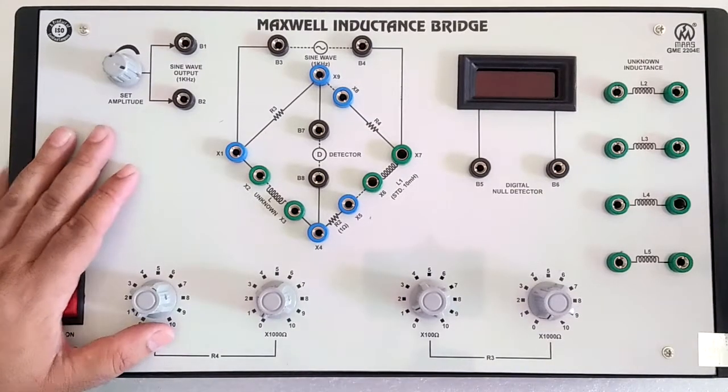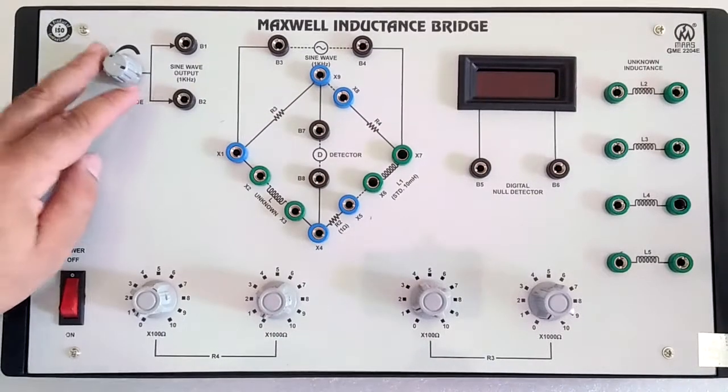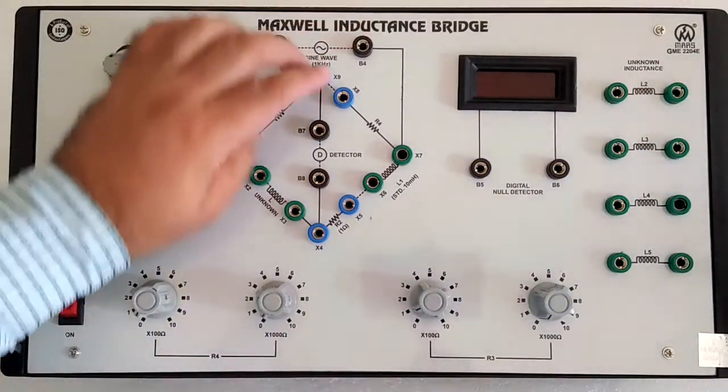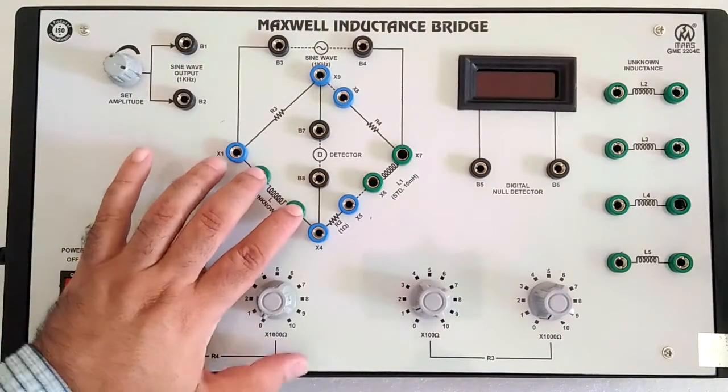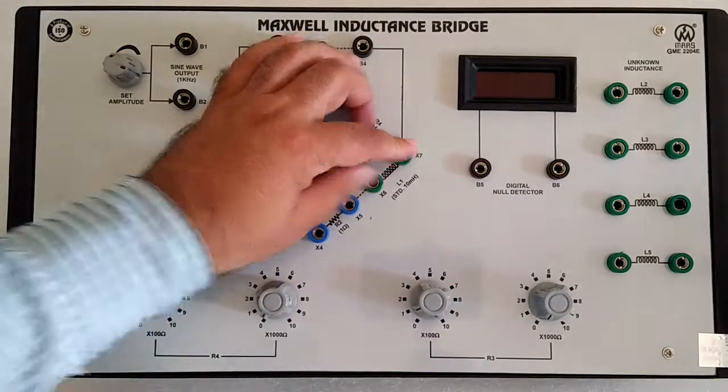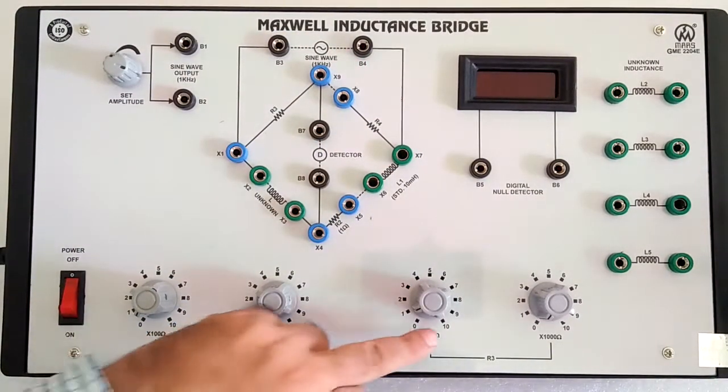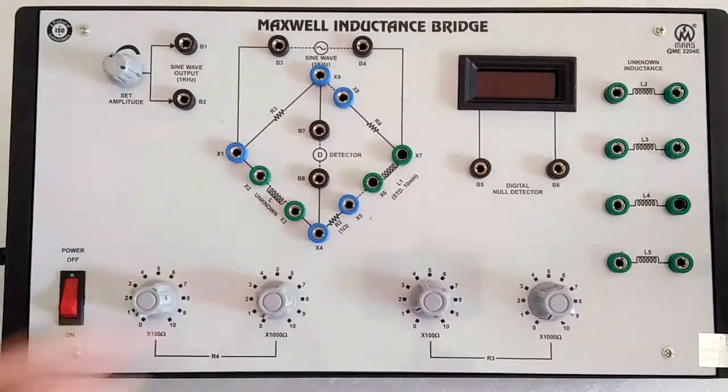Here is the Maxwell inductance bridge. This is used to find unknown inductance. The sine wave input source connects via the dotted line. The detector is for the unknown inductance, and here is the standard 10 millihenry. R4 is represented by this, and R3 is represented by this. This is the digital null detector.